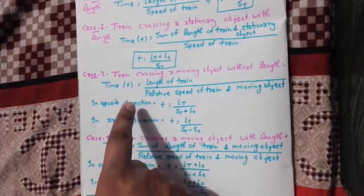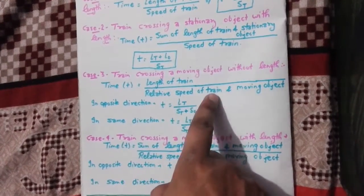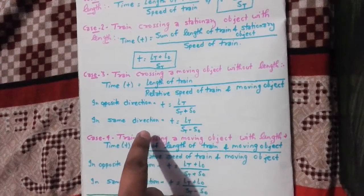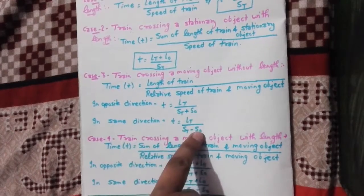Next case: train crossing a moving object without length. When the moving object is without length, time equals length of train upon relative speed of train and moving object. Lt over St plus So if this is in opposite direction, then it will be plus. In the same direction, if we cross in the same direction, then minus.